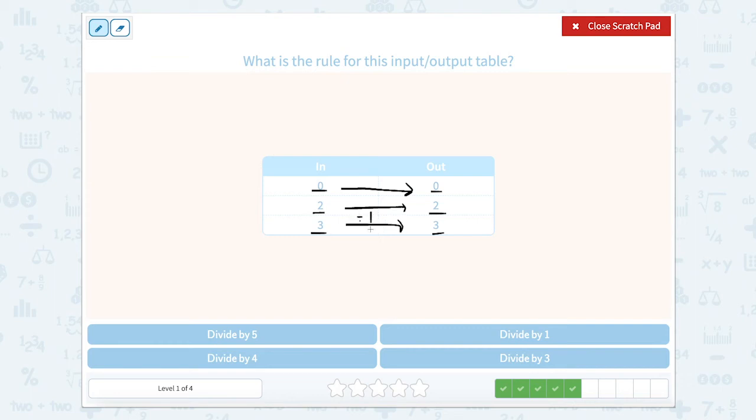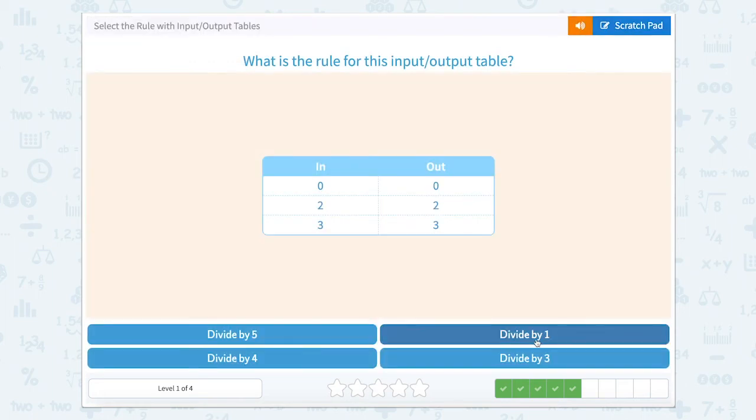If I have 3, I divide it by 1, I still have 3. 2 divided by 1, I still have 2. And remember that 0 divided by any number is going to give us 0. So divide by 1.